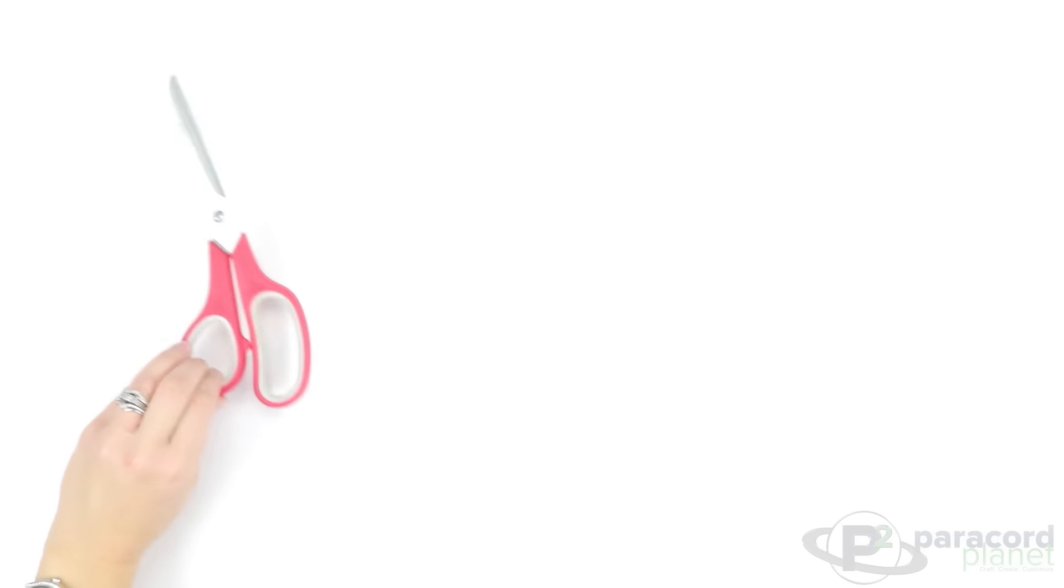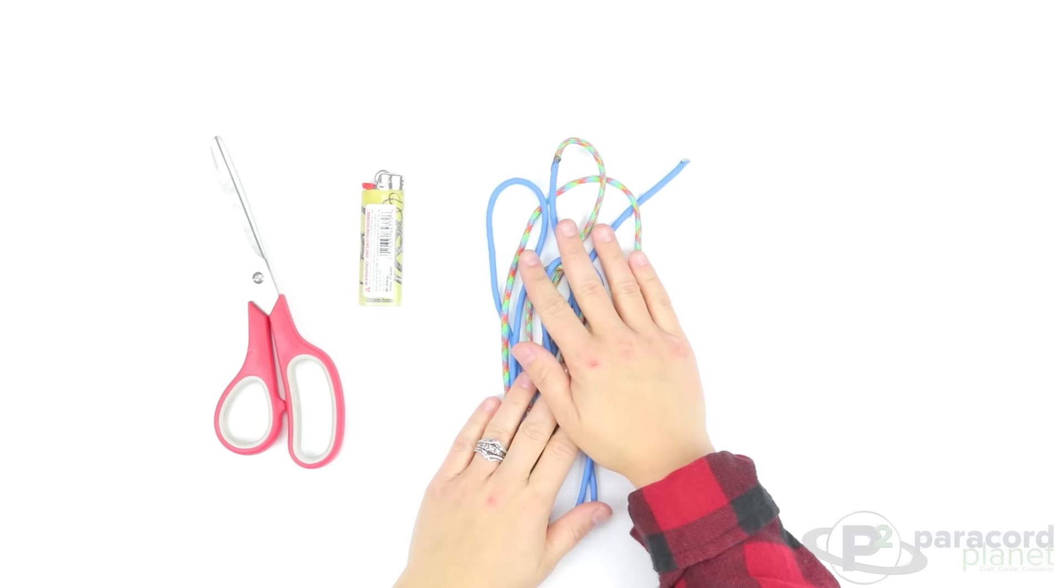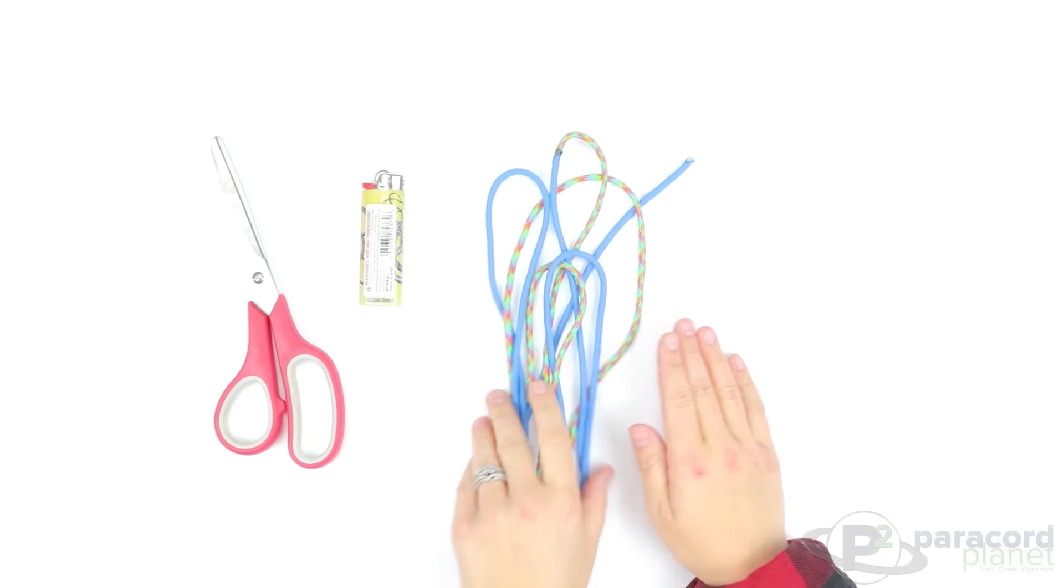For this you will just need scissors, a lighter, and two different colors of paracord. I have here 550 paracord.